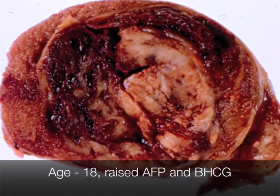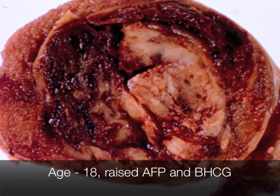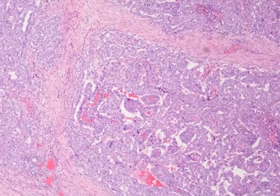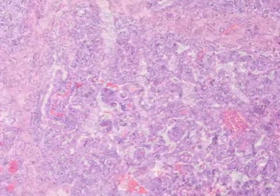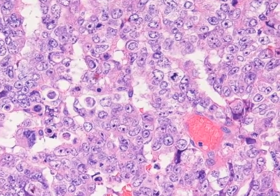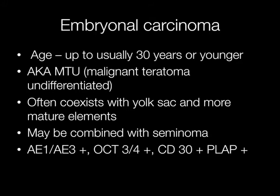This is an example of an embryonal carcinoma. These tumours occur in patients up to the age of 30. The old British classification used to call these malignant teratoma undifferentiated, or MTU. These tumours often co-exist with a yolk sac component and other mature elements, and they may also be combined with seminoma. If combined with seminoma, it is the non-seminomatous component that will dictate how the patient is treated.